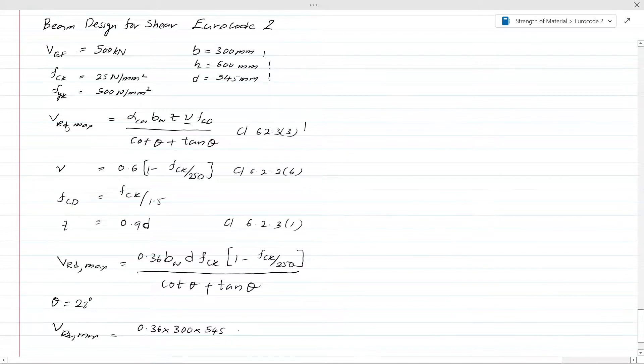545 millimeter. f_ck is 25 as we have considered in the data, and here f_ck also 25 divided by 250, then whole thing divided by cot θ + tan θ, where θ is 22 degrees. This value becomes VRd,max equals 460 kN.